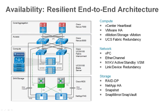For example, vCenter HeartBeat ensures that a redundant pair of vCenter servers are always running. All network fabrics, both fiber channel and Ethernet, feature redundant switches, with multi-path Ethernet being handled by Cisco virtual port channels or VPCs. On the storage side, NetApp RAID-DP provides disk-level redundancy, NetApp HA provides controller-level redundancy, and Snapshots, SnapMirror, and SnapVault provide strong data protection.